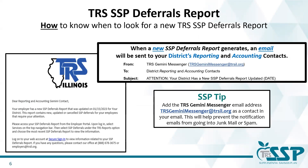One of the most frequently asked questions from employers new to the plan is: how do we know when there's a new SSP deferrals report for my district? If your district has a new enrollment — including a new automatic enrollment — a change in contribution amount or type, or a cancellation, then a new deferrals report will generate. When a new report generates, your district's Gemini reporting and accounting contacts will receive a notification email. You'll see an example of this email on the slide. It's a great idea to add the TRS Gemini Messenger email address to your email contacts to help prevent those emails from going to junk mail or spam.